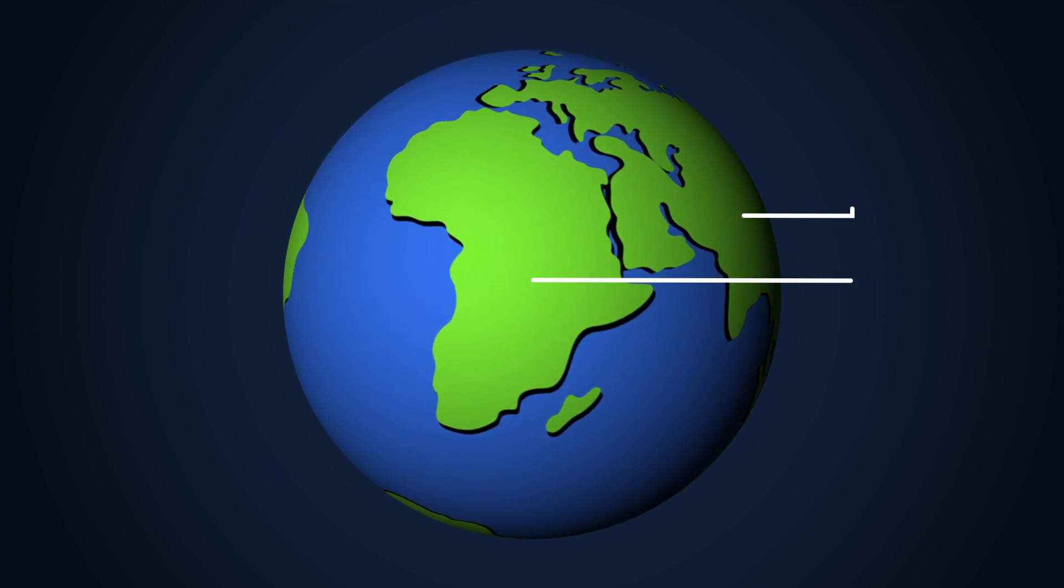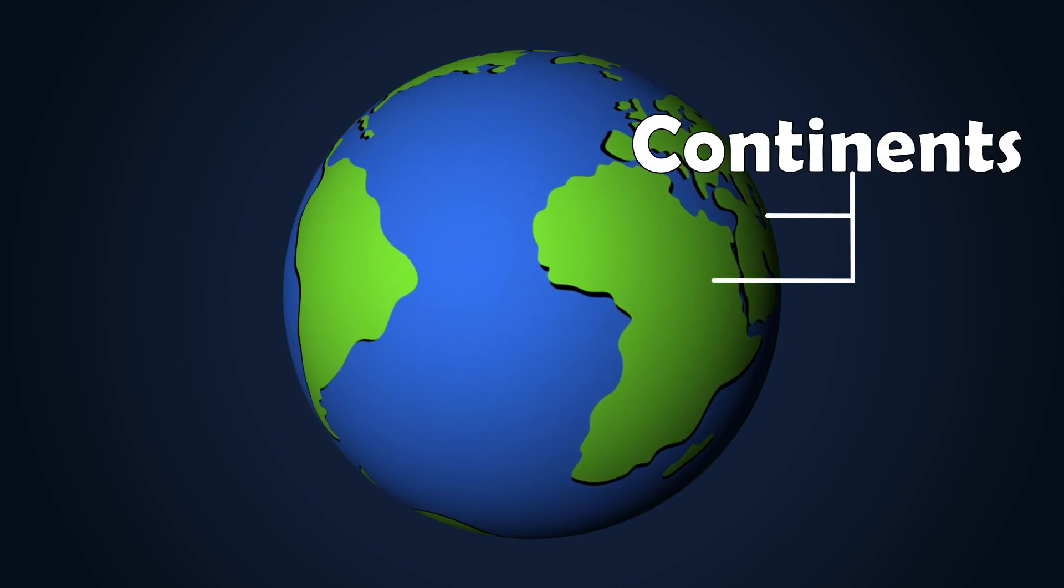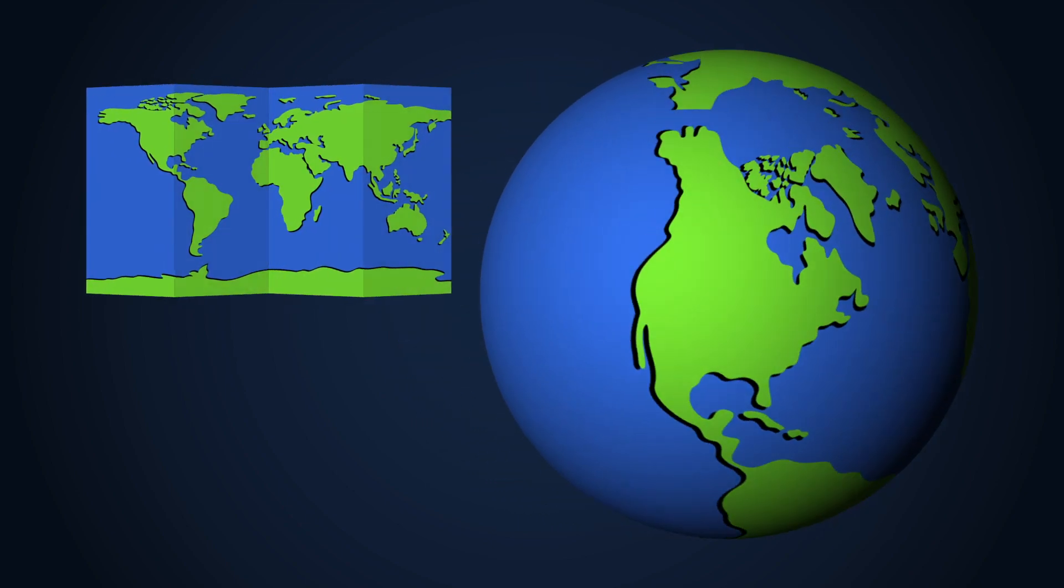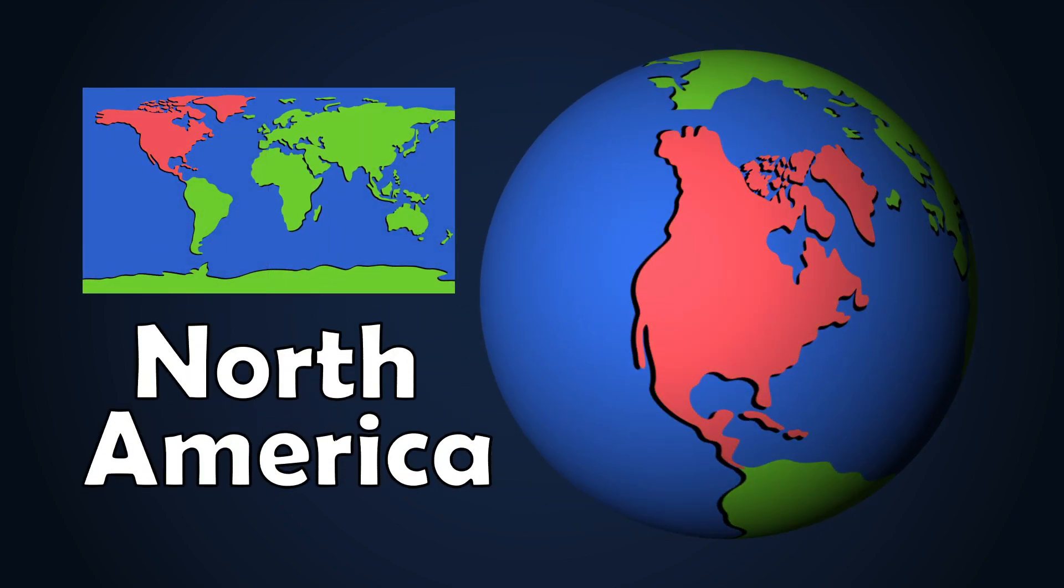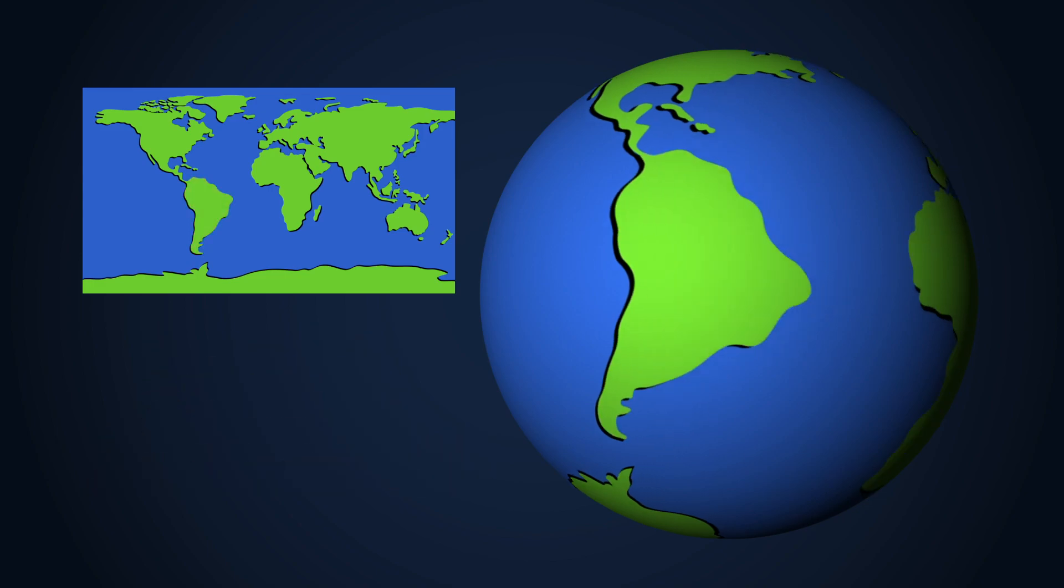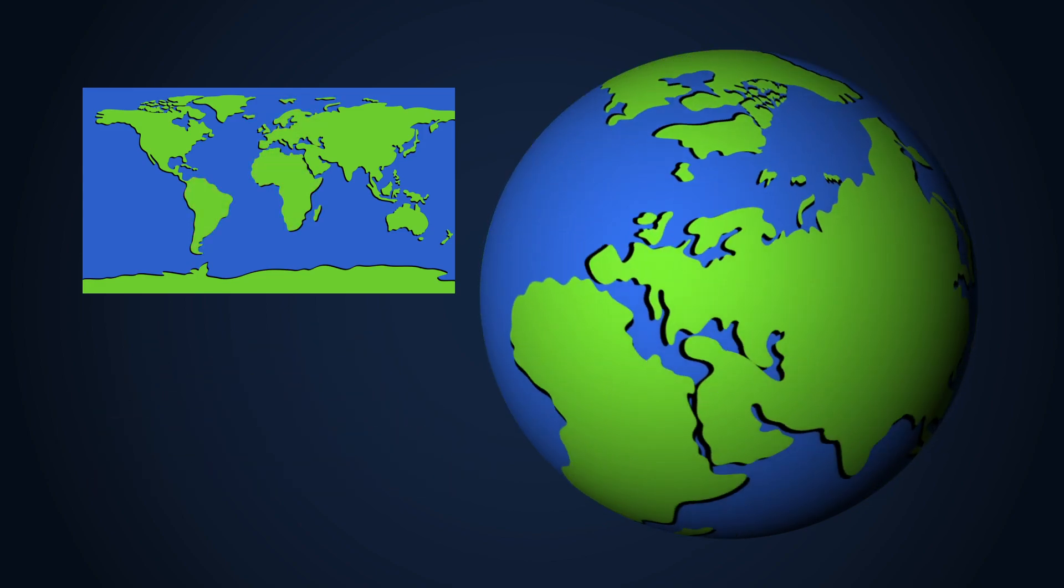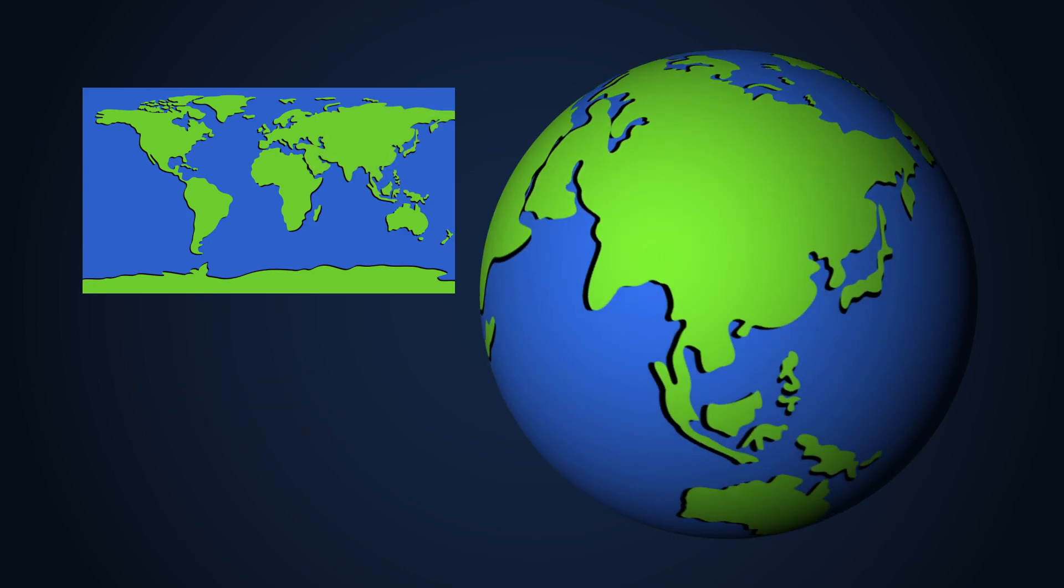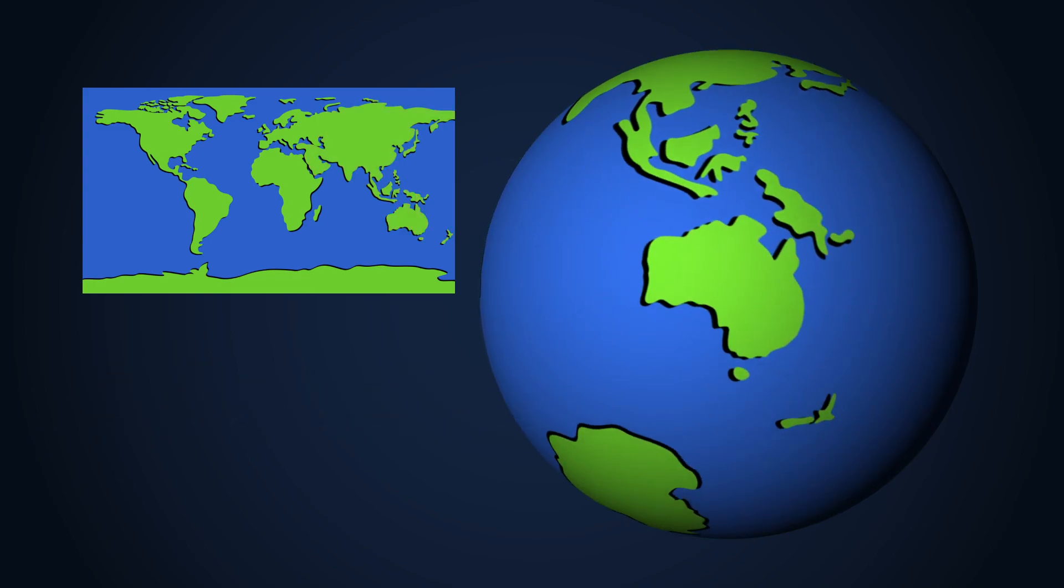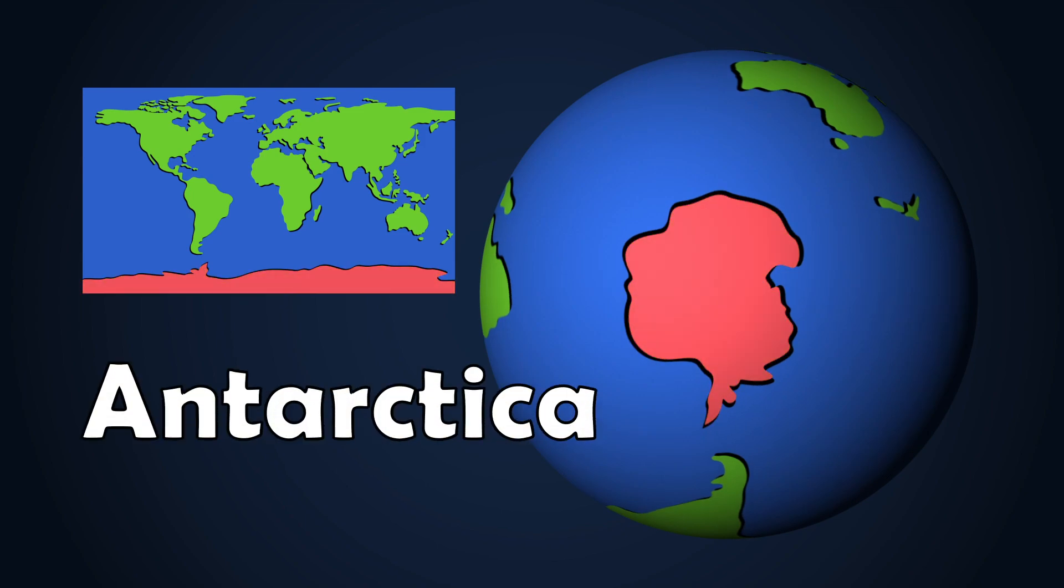The land that we can see are called continents. The Earth contains seven continents: North America, South America, Africa, Europe, Asia, Australia, and lastly, the icy tundra of Antarctica.